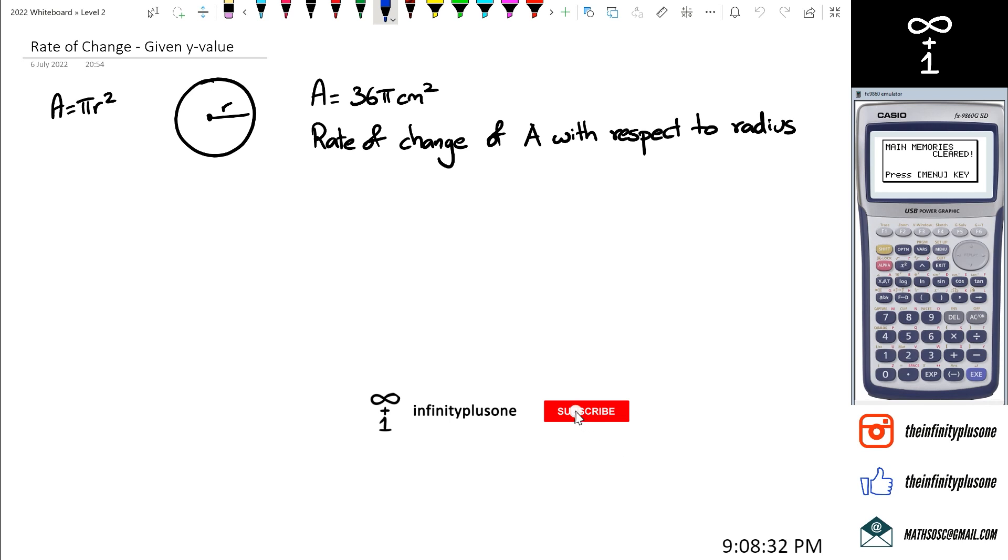Okay, so what we have here is we've got a circle with the area of the circle given as pi r squared. Now the question is if our area is 36 pi centimeters squared, which is right here, what would be the rate of change of A with respect to radius when the area is 36 pi centimeters squared?